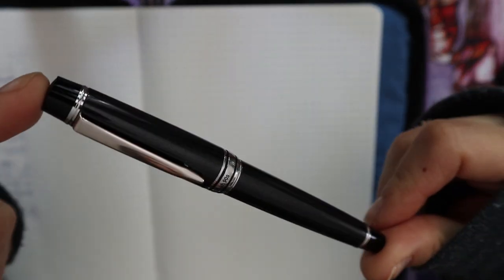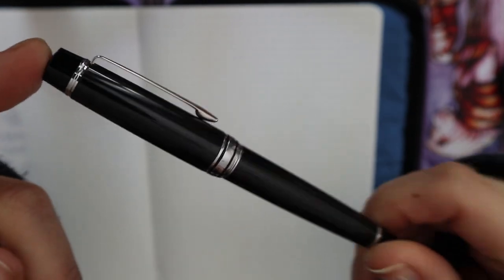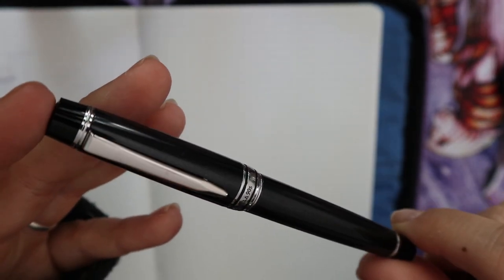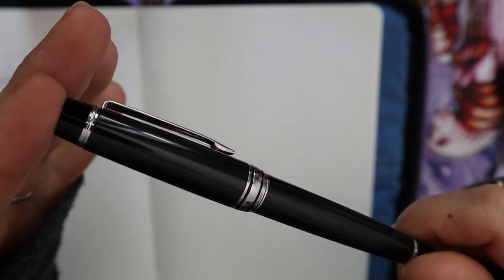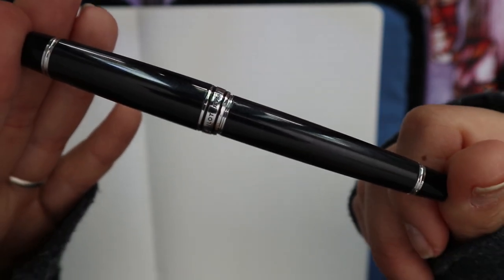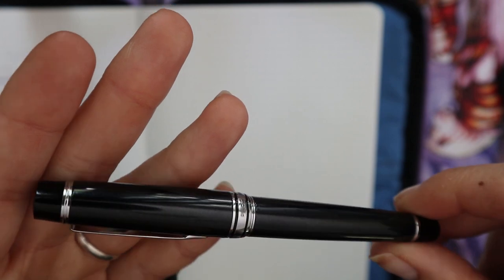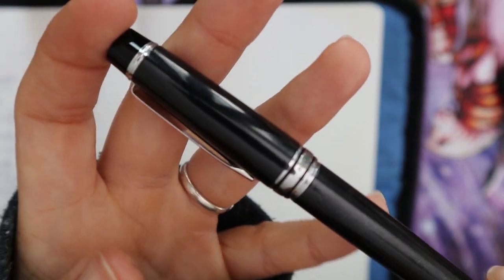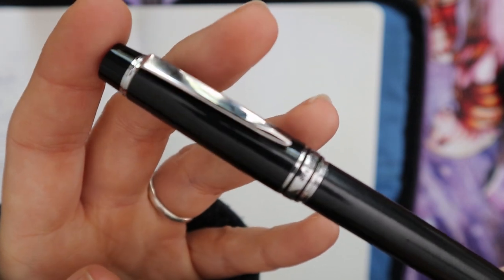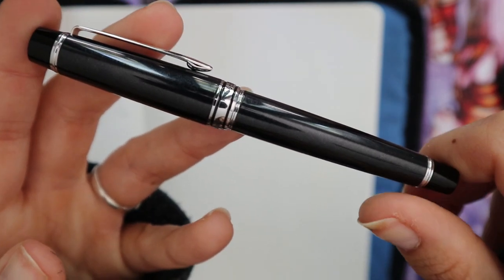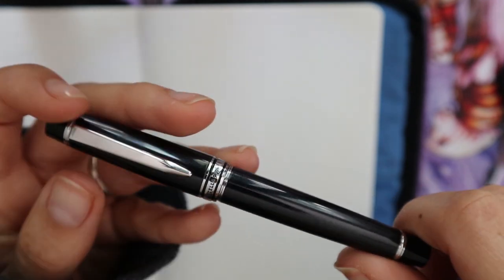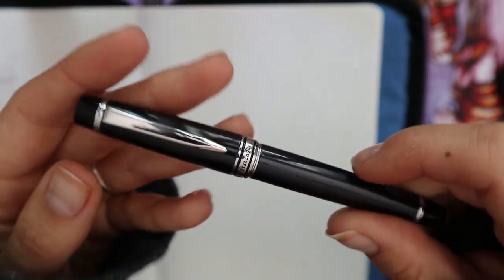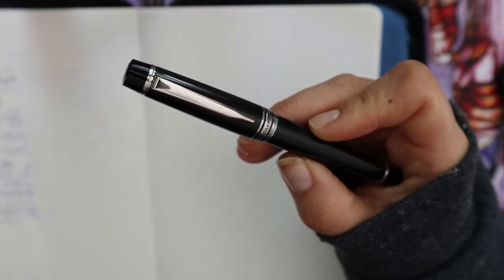Alright, here we are with a close-up of the Stella 90s or Stargazer depending on the market. I believe it was a Stella 90s in Japan and the Stargazer in the US. This is a black version with rhodium trim. This version is not like fully, fully black. There is some shimmer to the body which makes it look really interesting. This pen is discontinued, alas.